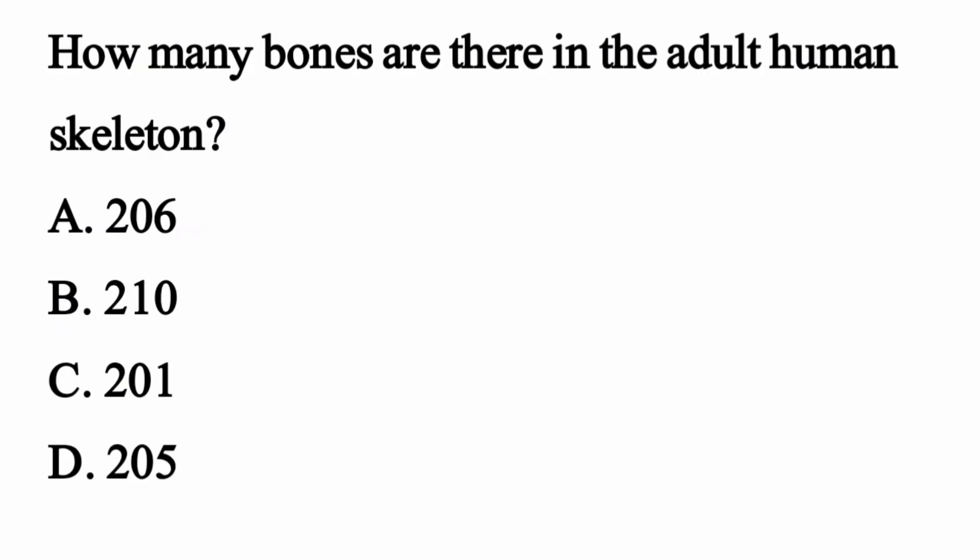How many bones are there in the adult human skeleton? The right option is Option A: 206.